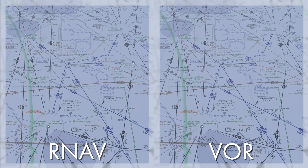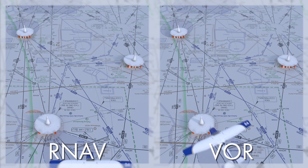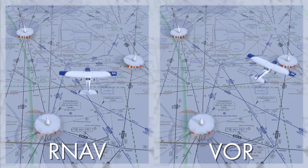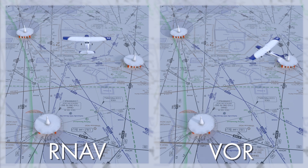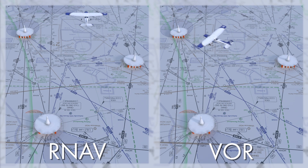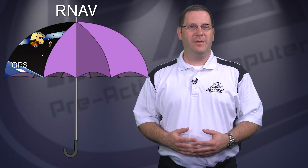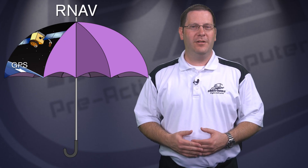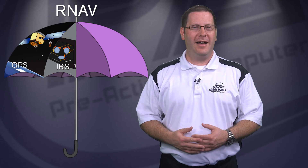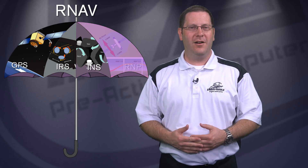GPS belongs to the umbrella navigation method RNAV, or Area Navigation. RNAV allows for an aircraft to fly any course within a network of beacons, as opposed to navigating directly to and from beacons like you would with a VOR. Other forms of navigation that belong to RNAV include IRS, INS, and RNP.